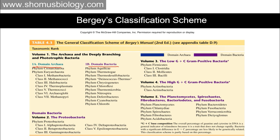In volume 2 we have Proteobacteria listed separately. In volume 3 we have gram-positive bacteria with very low GC content. In volume 4 we have only gram-positive bacteria with high GC content. In volume 5 we have all the misfits that cannot be placed in volumes 1 to 4 — spirochetes, Fibrobacteres, Bacteroidetes, Fusobacteria, Planctomycetes, and other different species. Bacteria are placed in different volumes based on one distinguishing property.